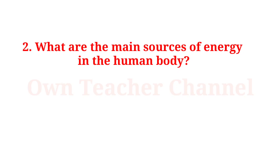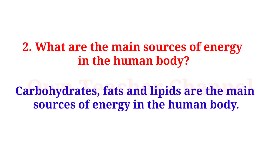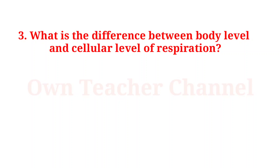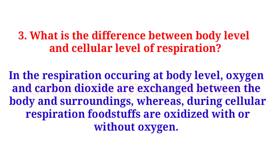Question 2: What are the main sources of energy in the human body? Carbohydrates, fats, and lipids are the main sources of energy. Question 3: What is the difference between body-level and cellular-level respiration? In body-level respiration, oxygen and carbon dioxide are exchanged between the body and surroundings, whereas during cellular respiration, foodstuffs are oxidized with or without oxygen.